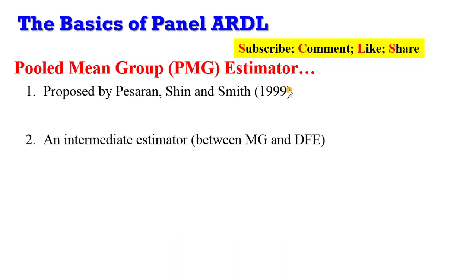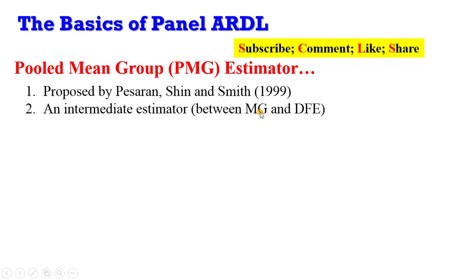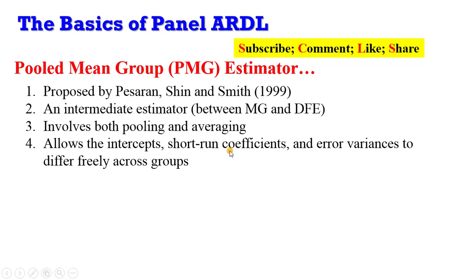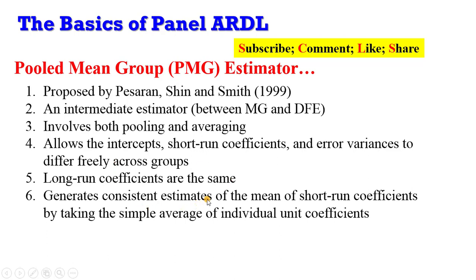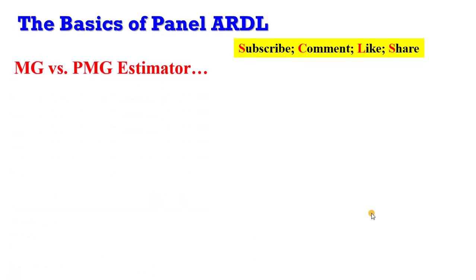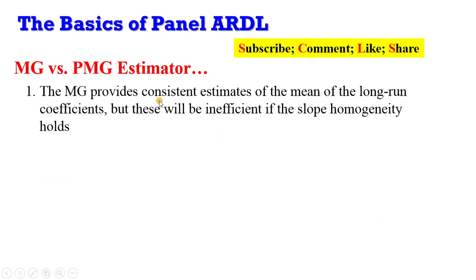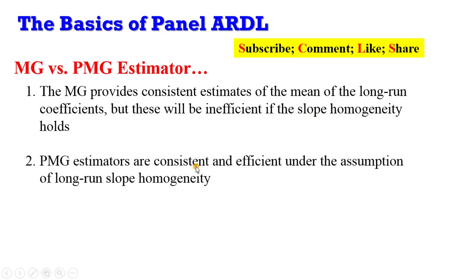The Pooled Mean Group (PMG) estimator, proposed by Pesaran, Shin, and Smith (1999), is an intermediate estimator between the MG and DFE. It involves both pooling and averaging of the sample. It allows intercepts, short-run coefficients, and error variances to differ freely across groups — these are heterogeneous — while the long-run coefficients are homogeneous, meaning they are the same across groups. The PMG generates consistent estimates of the mean of short-run coefficients by taking the simple average of individual unit coefficients.